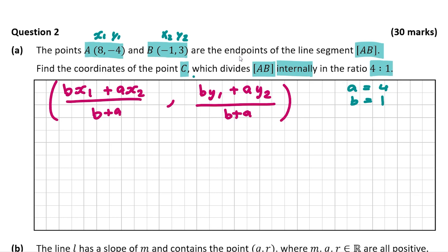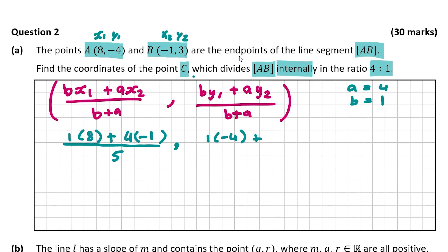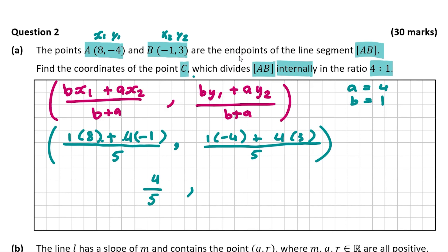We have 1 multiplied by X1, which is 8, plus A which is 4 multiplied by X2 which is -1, all over B plus A which is 5. Then we have B which is 1 multiplied by Y1 which is -4, divided by 5. So we have 8 - 4 = 4 over 5, and then -4 + 4×3, so that's -4 + 12 = 8 divided by 5. So the point C is (4/5, 8/5) and that is our answer, worth 10 marks.